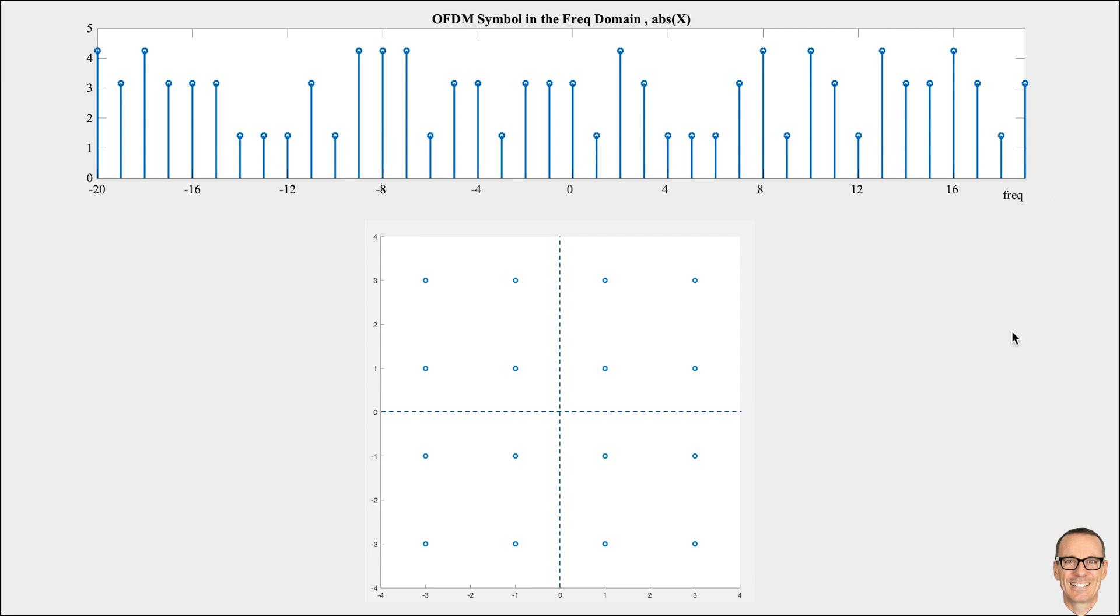And the data points are coming from a QAM constellation with 16 constellation points. I'm plotting the magnitudes here. So you can see that, for example, when the data is at constellation point 1, 1, then it's going to have a magnitude of 1.41. And you can see the other magnitudes here, 3.16 and 4.24, which correspond to the different constellation points.